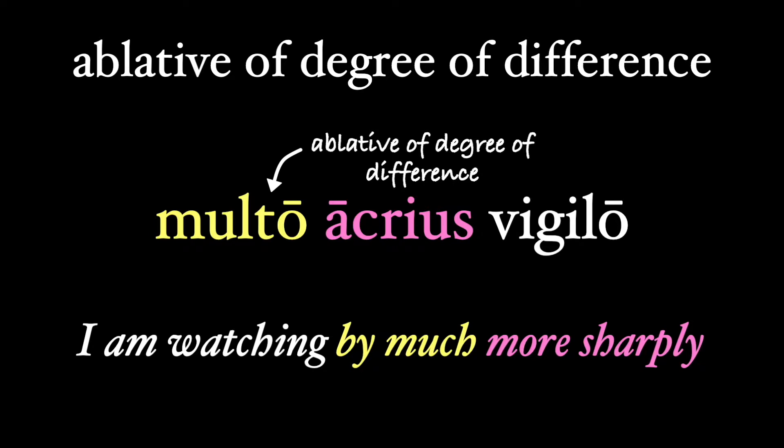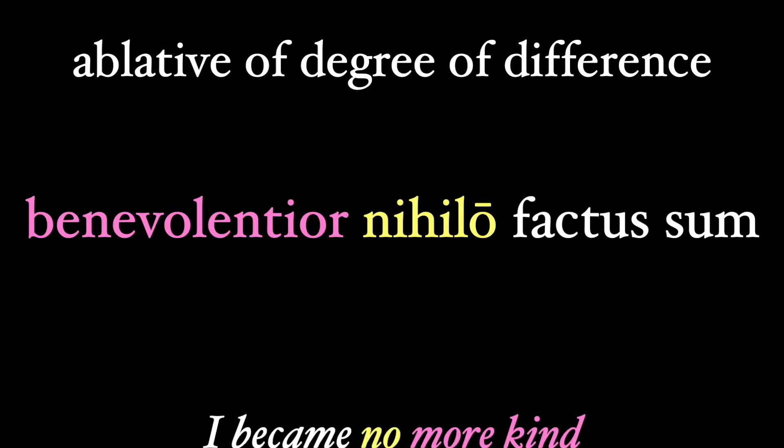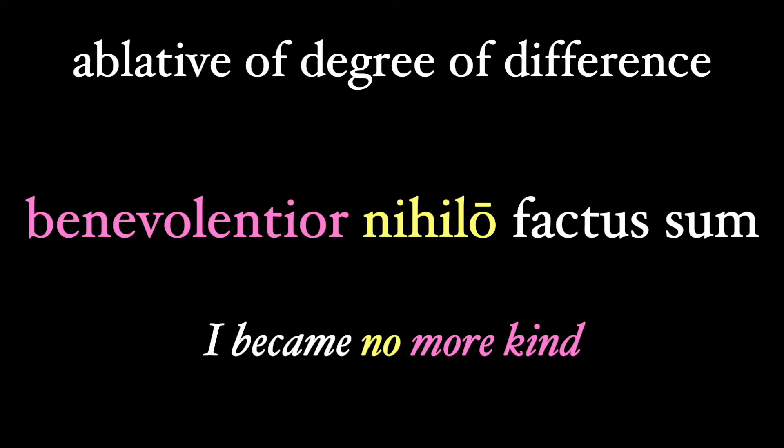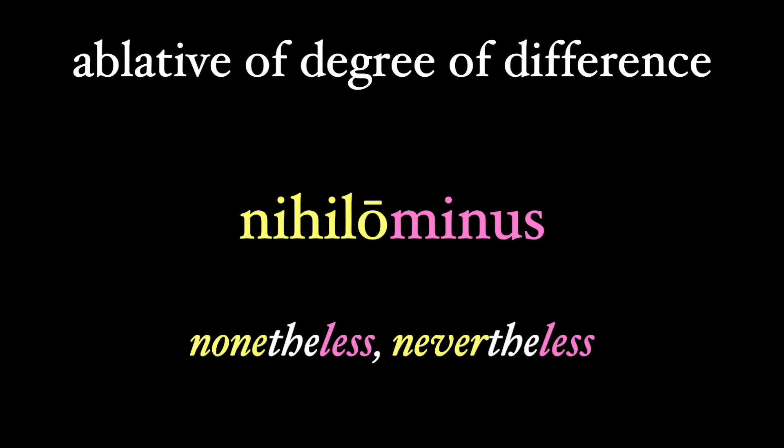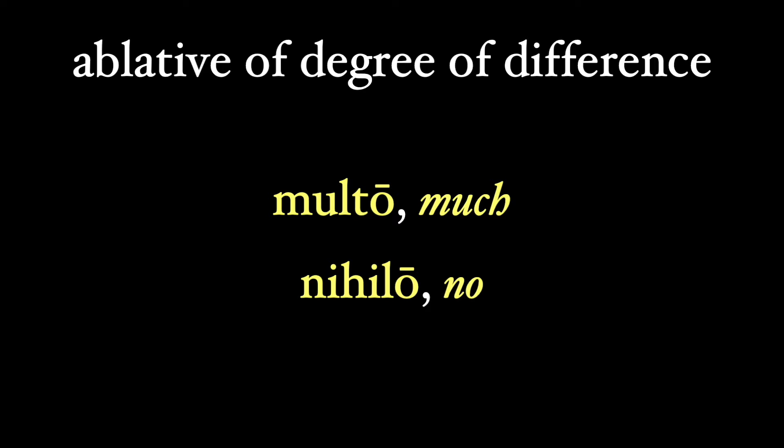That's the degree of difference. We often see the ablative of nihil used here too: benevolentior nihilo factus sum — literally, 'I became more kind by nothing,' but we could just go with 'no more kind.' This ablative nihilo is frequently found with the comparative minus as the single word nihilominus, which we could translate as 'nonetheless' or 'nevertheless.' It's common to treat multo and nihilo as simple adverbs — remember that the ablative is often an adverbial use of the noun.